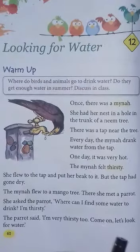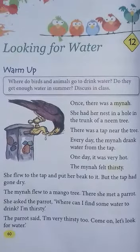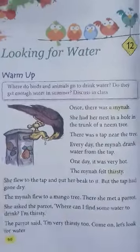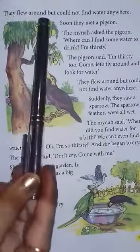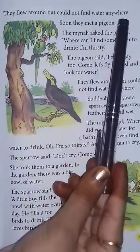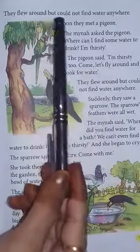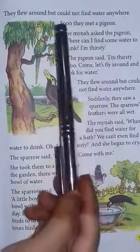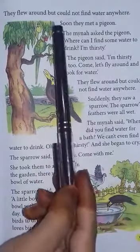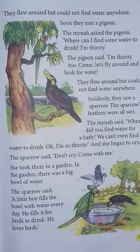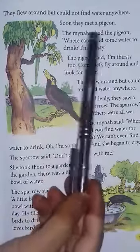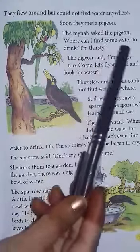The mina and parrot flew around together but could not find water anywhere. Soon they met a pigeon. The mina asked the pigeon, 'Where can I find some water to drink? I'm thirsty.' So first the mina met the parrot, then they flew around but couldn't find water, and next they met a pigeon.